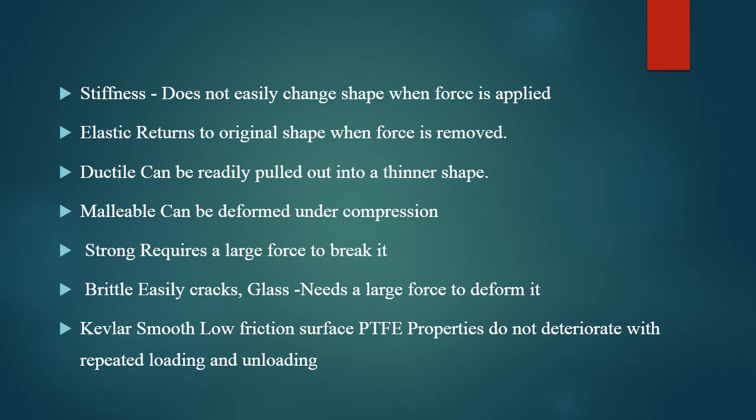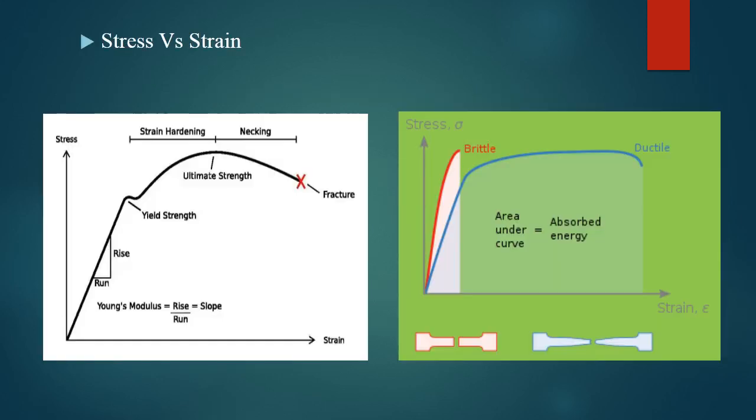The last property is Kevlar — it has a smooth, low friction surface, like polytetrafluoroethylene. It does not fatigue with repeated loading; it doesn't change its property when given too much load, and when the load is withdrawn, there is no change in its property.